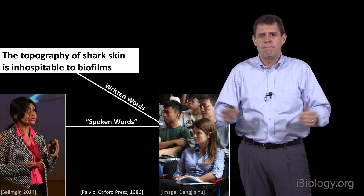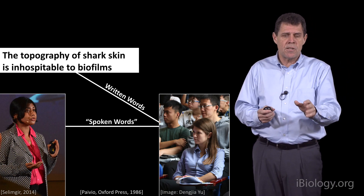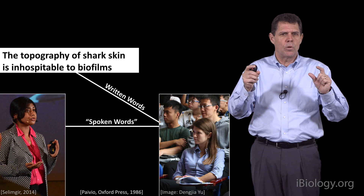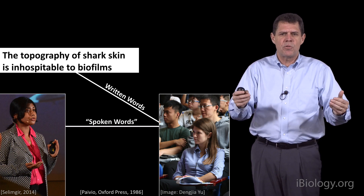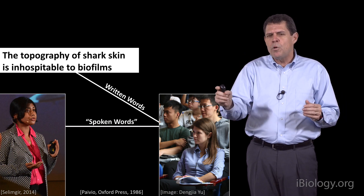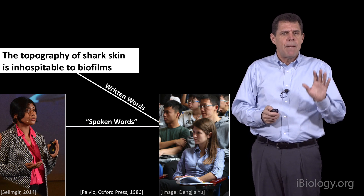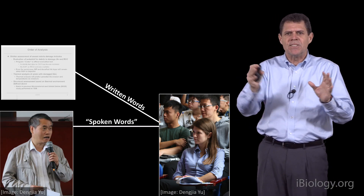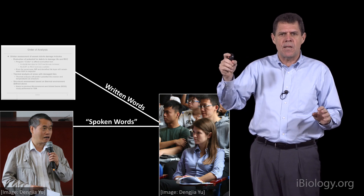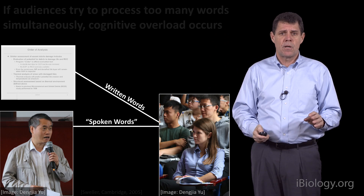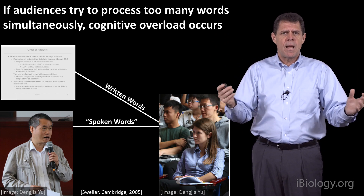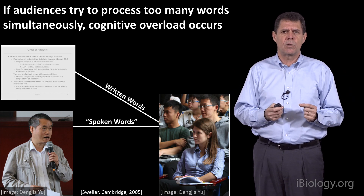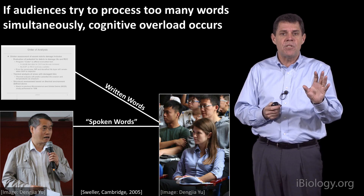Sweller ran experiments with one room where people just read, one where people just listened, and another where people both read and listened. When there weren't too many words, the read-and-listen room did best. But when too many words were projected, that room went from first to worst. Sweller developed the theory that if audiences try to process too many words, cognitive overload occurs — and that is what happens in many presentations.